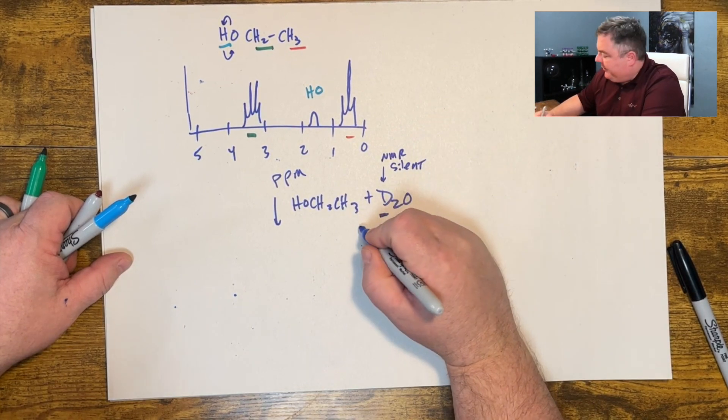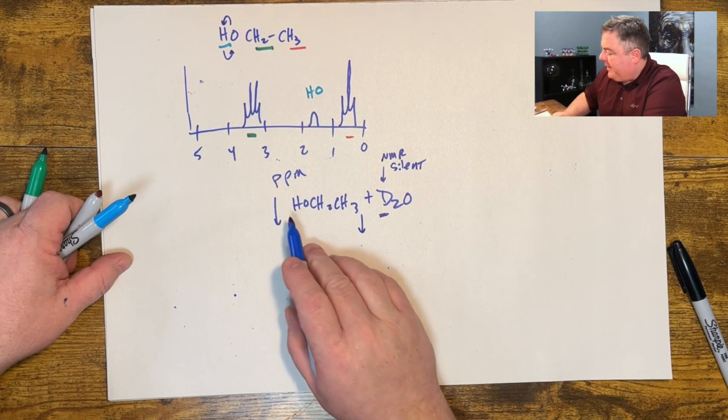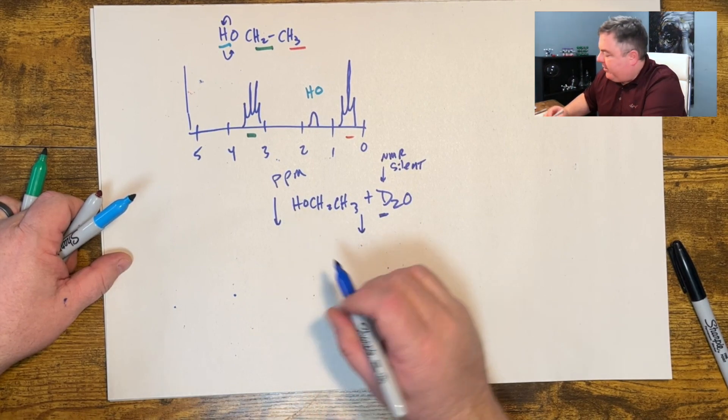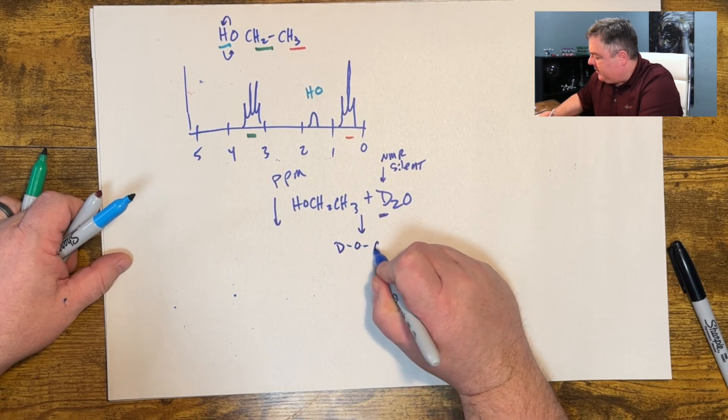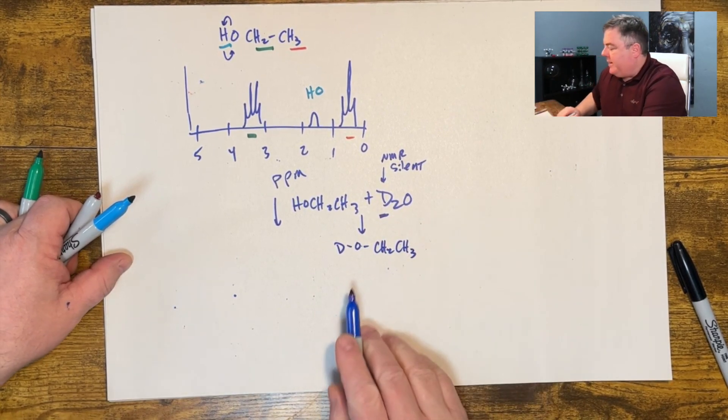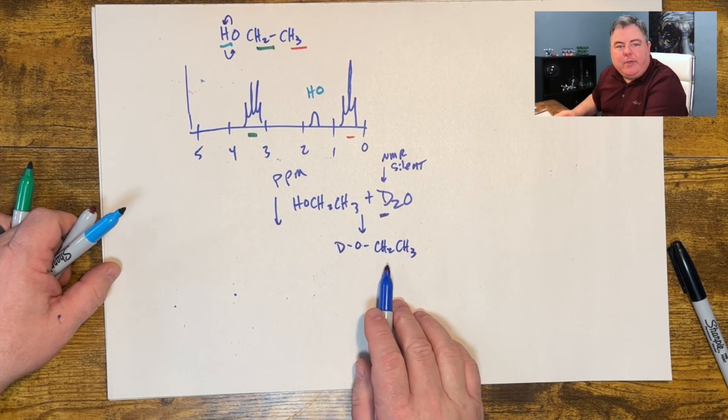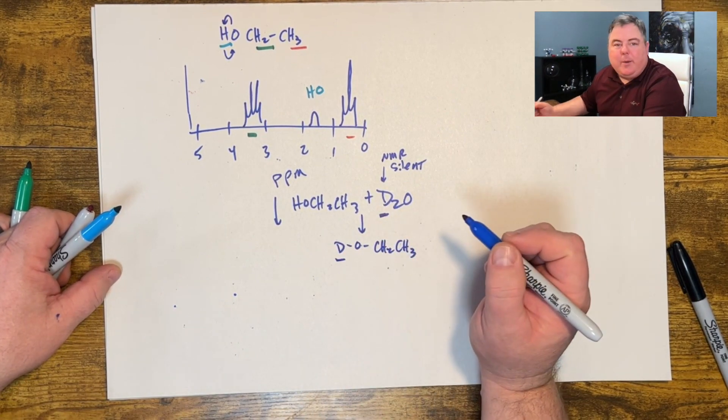So what happens when you add D2O to an alcohol is because this hydrogen falls on or off, it gets replaced with one of these deuteriums and your ethanol becomes deuterated ethanol, and this does not show up in the NMR.